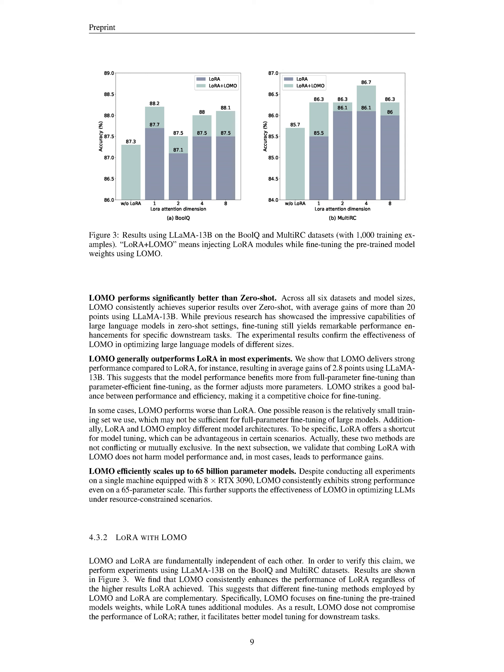The empirical evidence from our experiments validates the potency of LOMO in optimizing large language models of various scales. Secondly, our study shows that LOMO typically surpasses LoRA in performance in most of our trials — we found an average performance improvement of 2.8 points when using LLaMA 13B with LOMO compared to LoRA. This outcome implies that full parameter fine-tuning, which adjusts a larger number of parameters, provides a greater boost to the model's performance than parameter-efficient fine-tuning. LOMO finds a sweet spot between performance and efficiency.